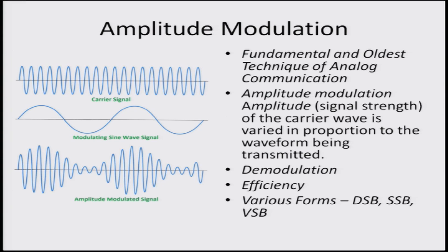In amplitude modulation there are several issues — for instance, how is amplitude modulation performed, what are the various factors that affect it, what are the various demodulation and modulation strategies, and what are the various techniques of amplitude modulation such as single sideband modulation, double sideband modulation, and vestigial sideband modulation.